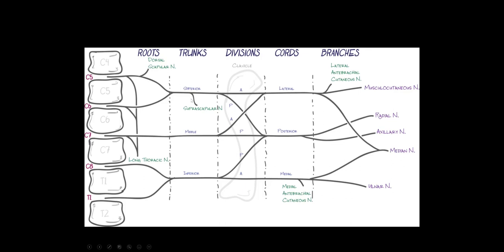Remember, there's only one nerve that comes off at the root level that goes to the shoulder — that's the suprascapular nerve, which supplies infraspinatus and supraspinatus. We also have a couple of important sensory nerves: the medial antebrachial cutaneous, which supplies the medial forearm off the medial cord, and the lateral antebrachial cutaneous, which supplies the lateral forearm.